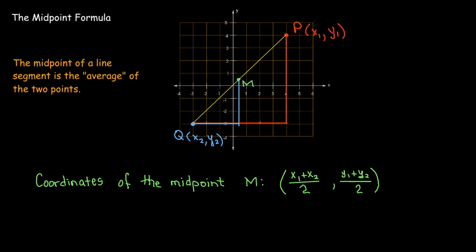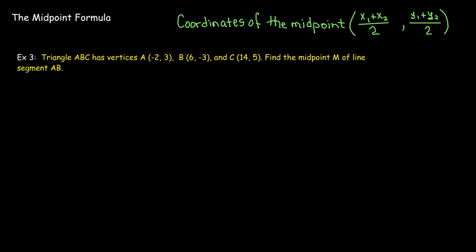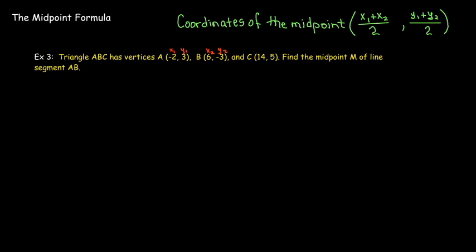Let's look at some examples. We have a triangle and know all the coordinates of its vertices. We'd like to find the midpoint of line segment AB. So x₁ = -2, x₂ = 6, y₁ = 3, y₂ = -3, and we'll apply the midpoint formula.